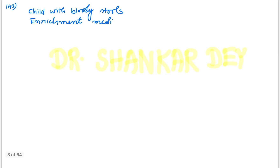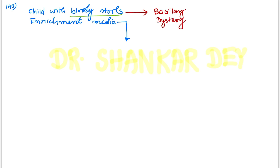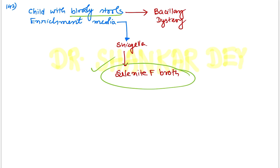Question 142: A child with bloody stools — which enrichment media is to be used? The case is mainly bloody stool, which is bacillary dysentery. One of the common causes is Shigella. For Shigella, Selenite F broth is used as enrichment media. Selenite F broth or tetrathionate broth can be used, but the option given was Selenite F broth.